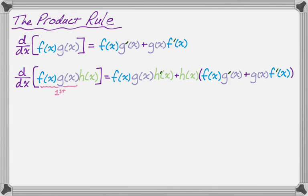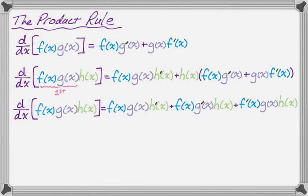What I'm going to do is rearrange all of that and show it on screen at once. So I distributed h(x) in the line above and then rearranged it. Each of them just goes in order f, g, h — but it's f times g times h prime, plus f times g prime times h, plus f prime times g times h.